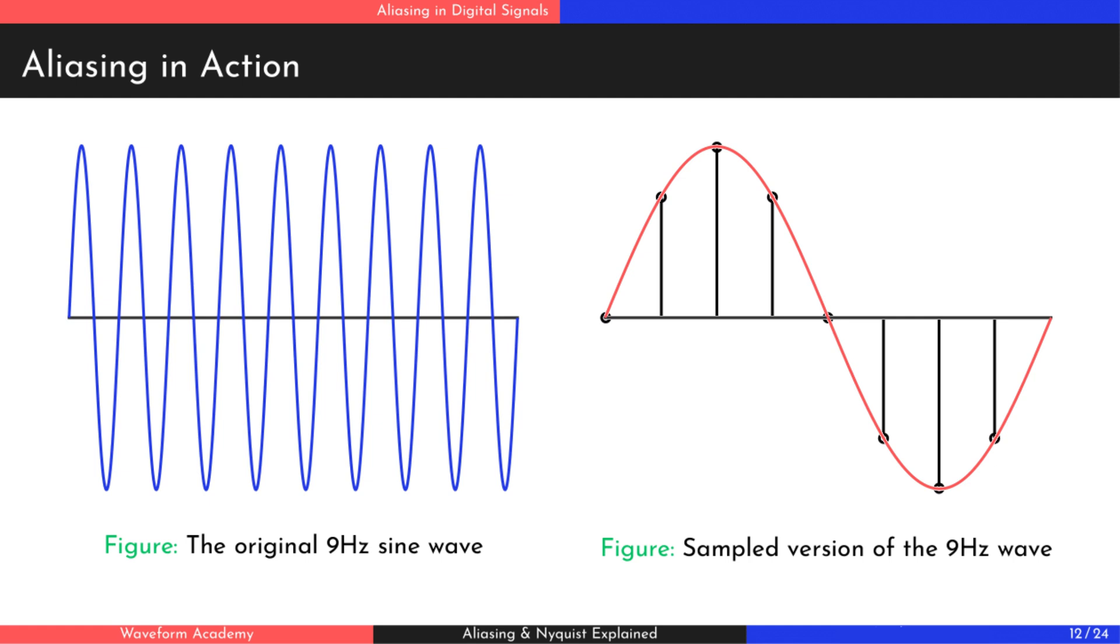Even though the actual signal was 9 Hz, after sampling, it appears as a 1 Hz sine wave instead. According to the Nyquist theorem, when sampling at 8 Hz, we can only accurately represent frequencies up to 4 Hz. Any frequencies beyond this threshold will be misinterpreted as lower frequencies within the 0 to 4 Hz range. They're aliases.